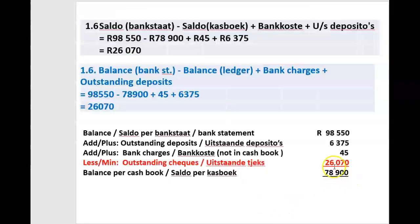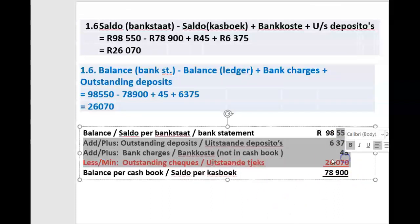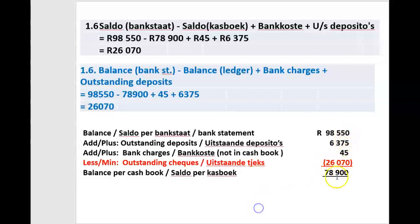So the missing figure is outstanding checks. Working through the computation: 98,550 plus 6,375 plus 45 less outstanding checks equals 78,900. Therefore outstanding checks must be 26,070 Rand — confirmed by the calculation.